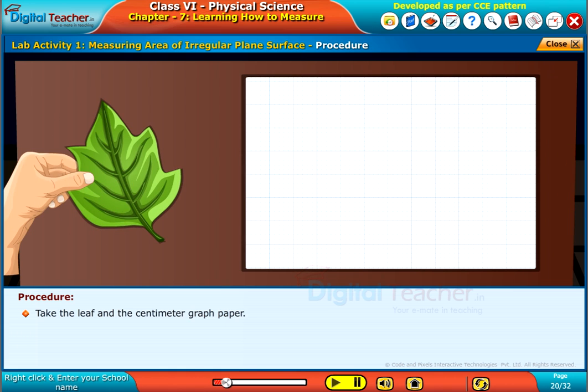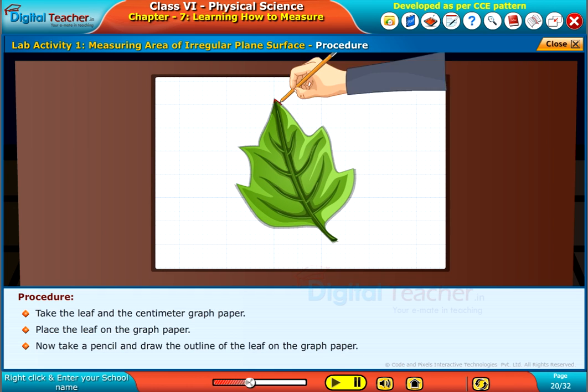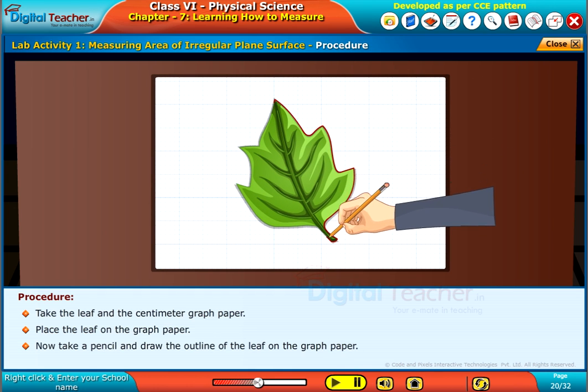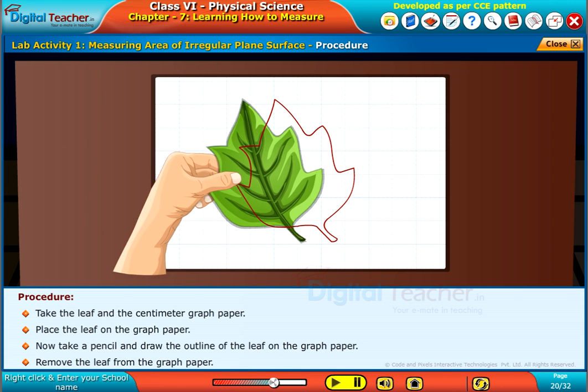Take the leaf and the centimeter graph paper. Place the leaf on the graph paper. Now, take a pencil and draw the outline of the leaf on the graph paper. Remove the leaf from the graph paper.